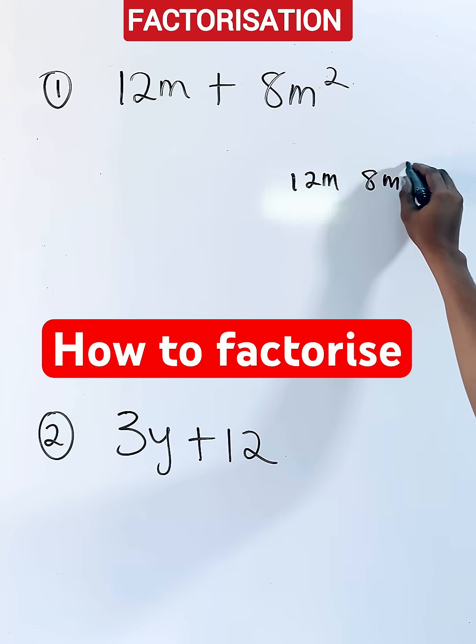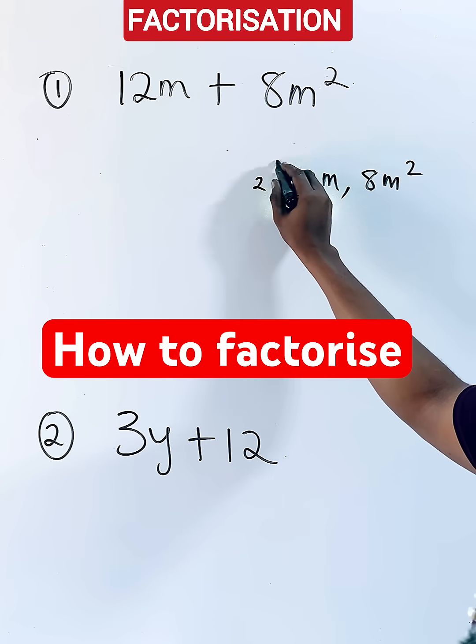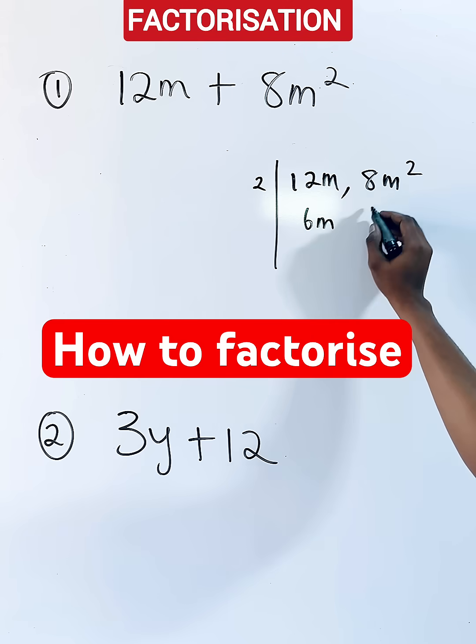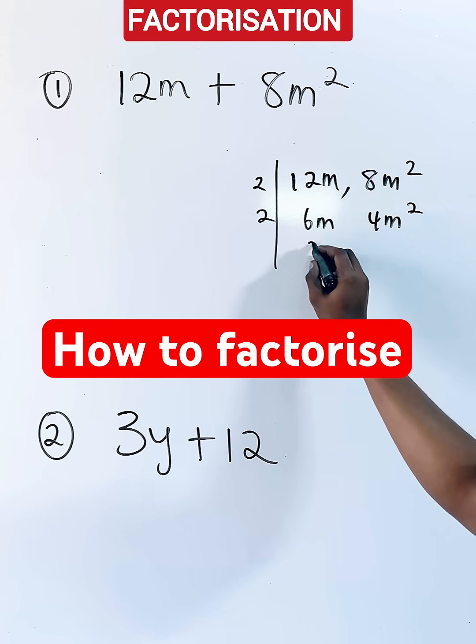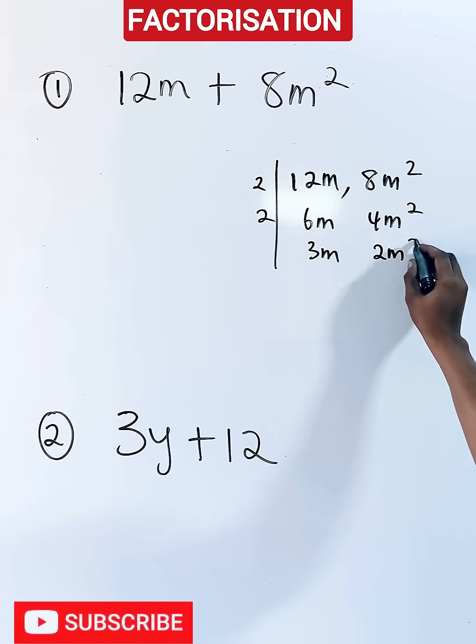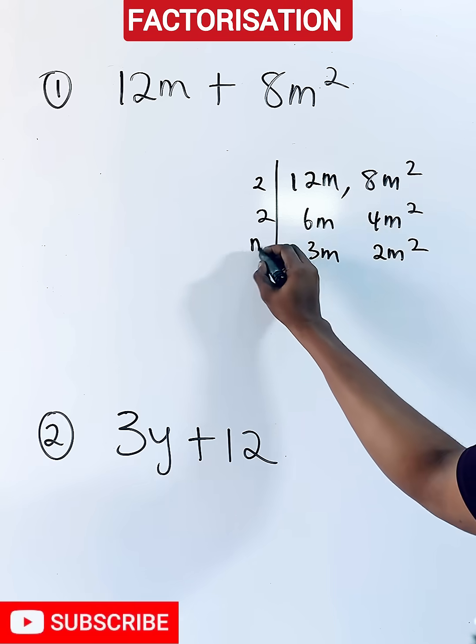You see that two can go here to give you 6m, two can also divide this to give you 4m squared. Two can go to give you 3m, this will give you 2m squared. Now m can divide to give you 3, this will give you 2m.